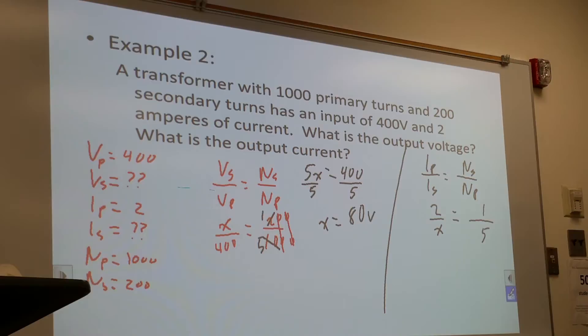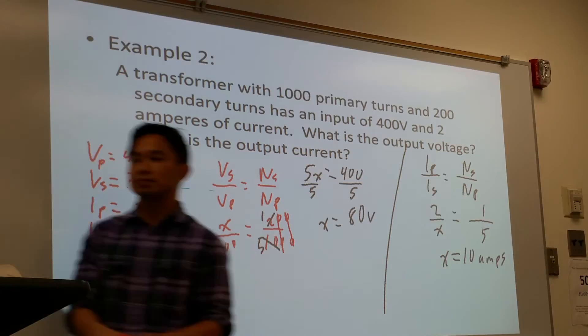Cross-multiply. 5 times Is equals 2. Divide by 5. So output current is equal to 0.4 amperes.